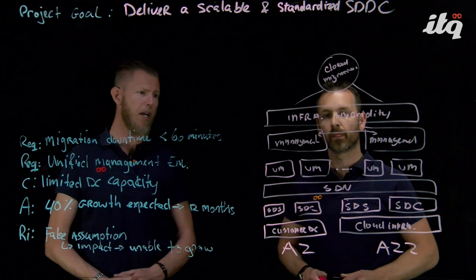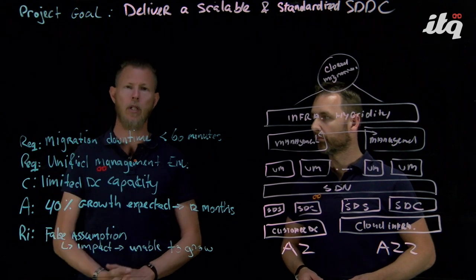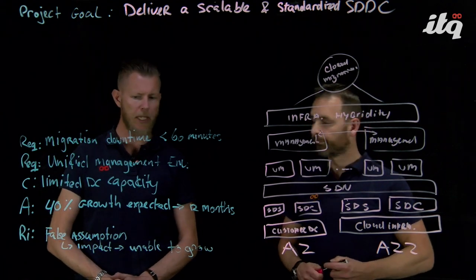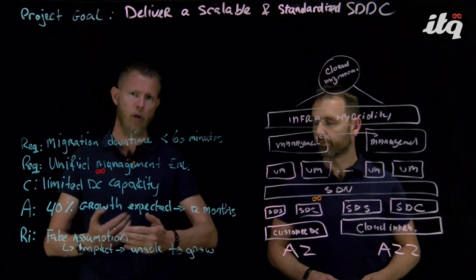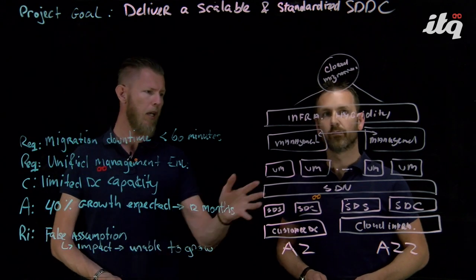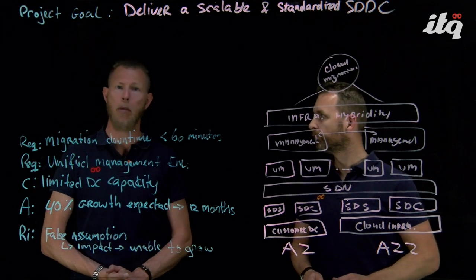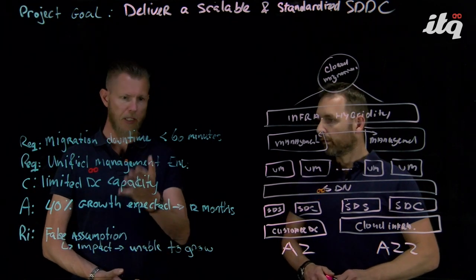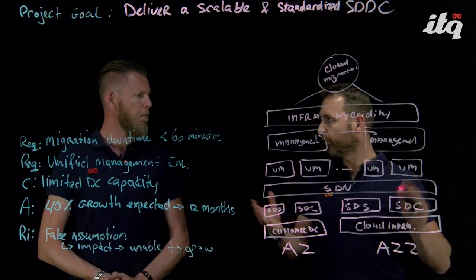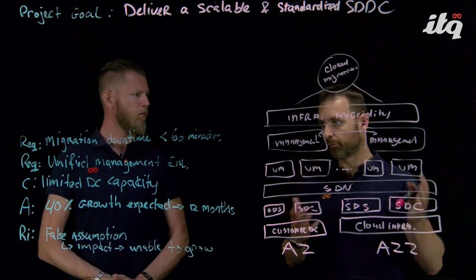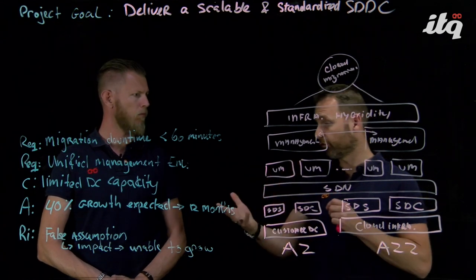We have a unified management environment because we are looking at a unified management plane. Because of the limited data center capacity and the 40% growth expected — the assumption and the risk that we had — we've mitigated that risk by adding a cloud infrastructure that has unlimited scalability options. This is a perfect example of how a conceptual design should look: fit for purpose, to make sure you understand the reasoning behind translating an assumption into a risk given a constraint.